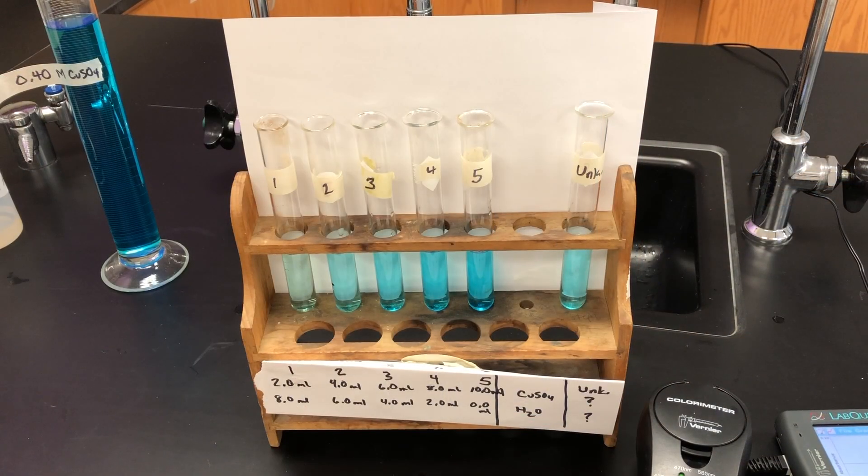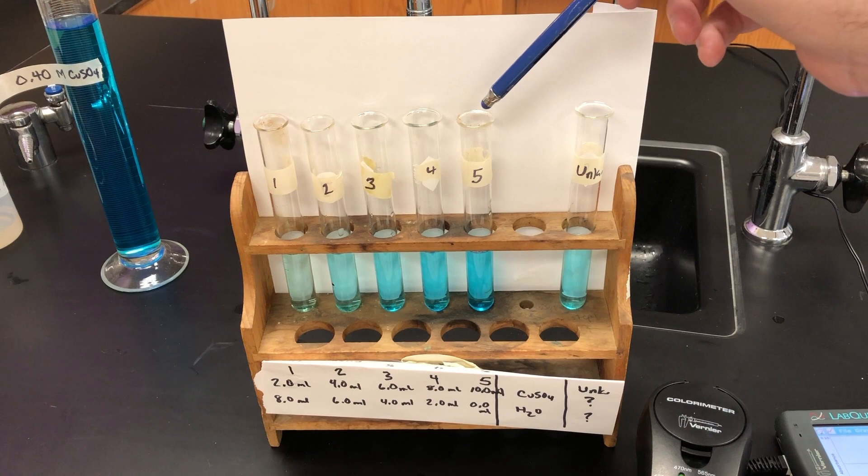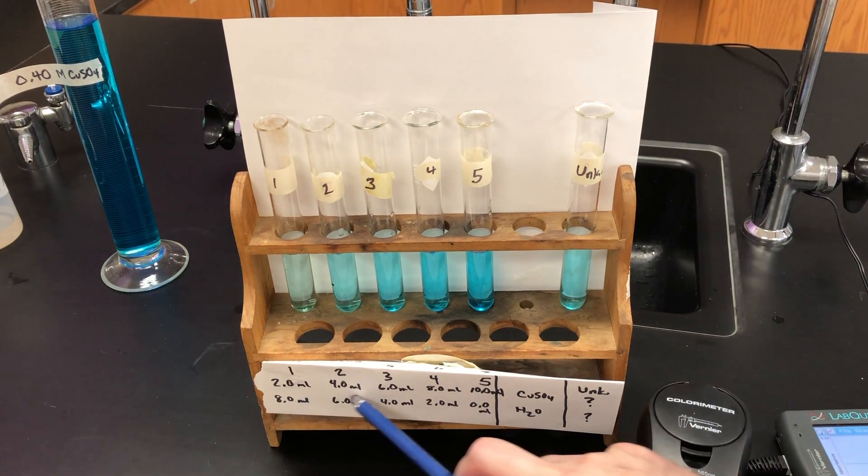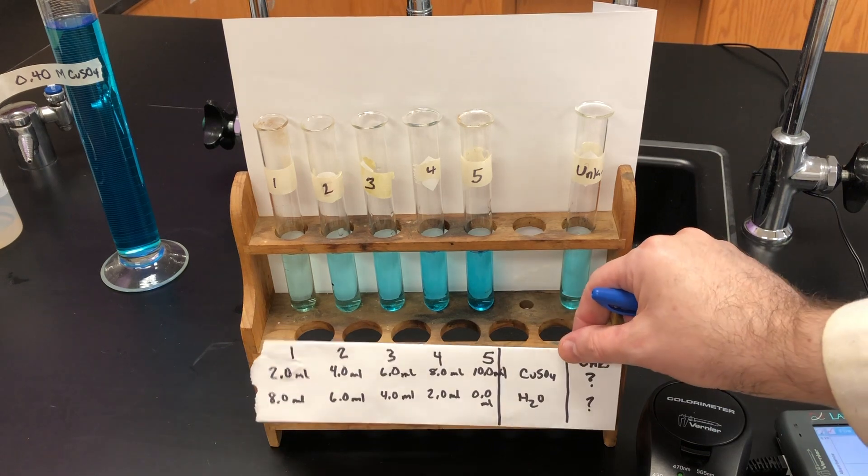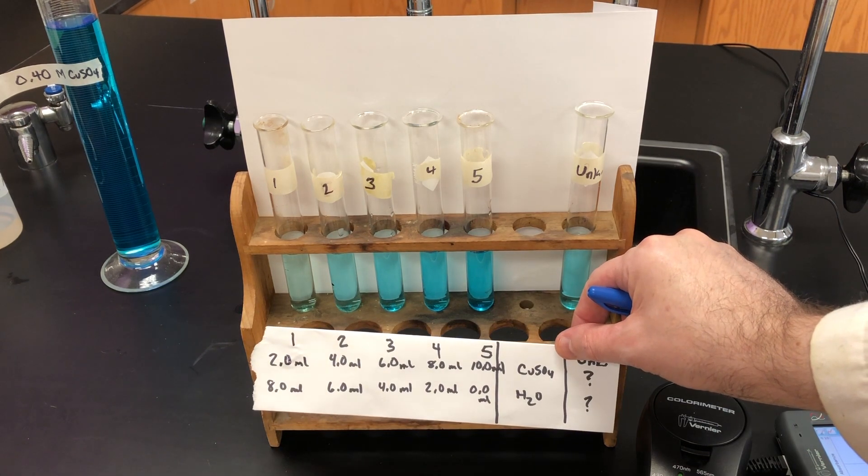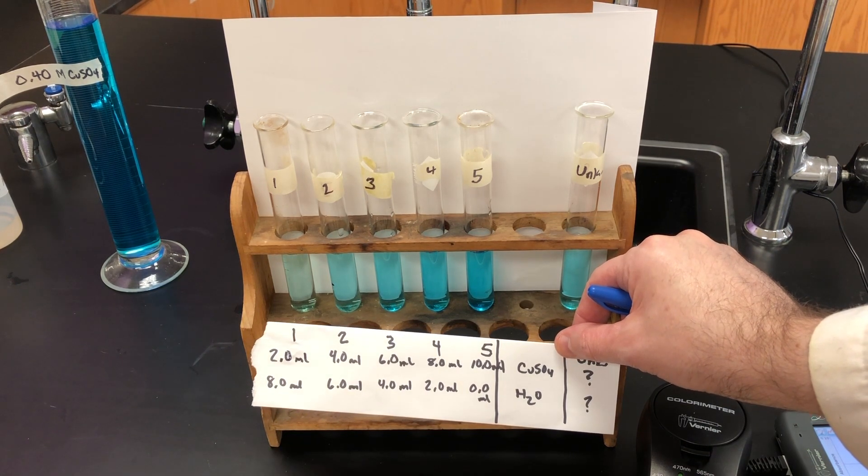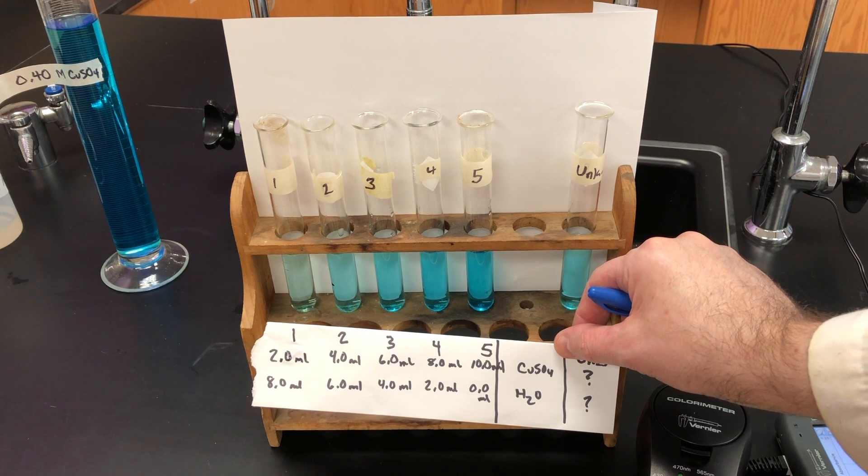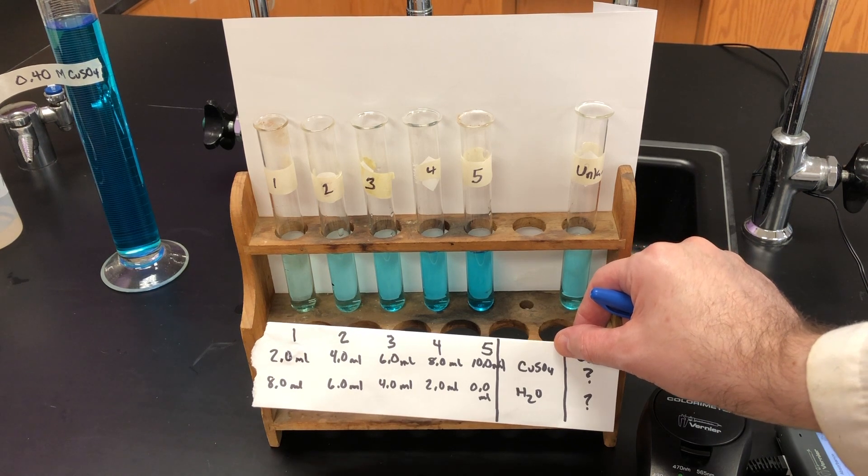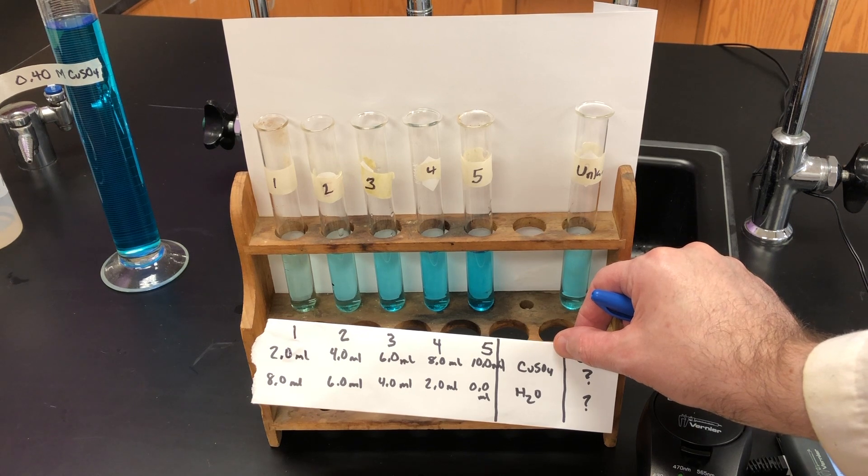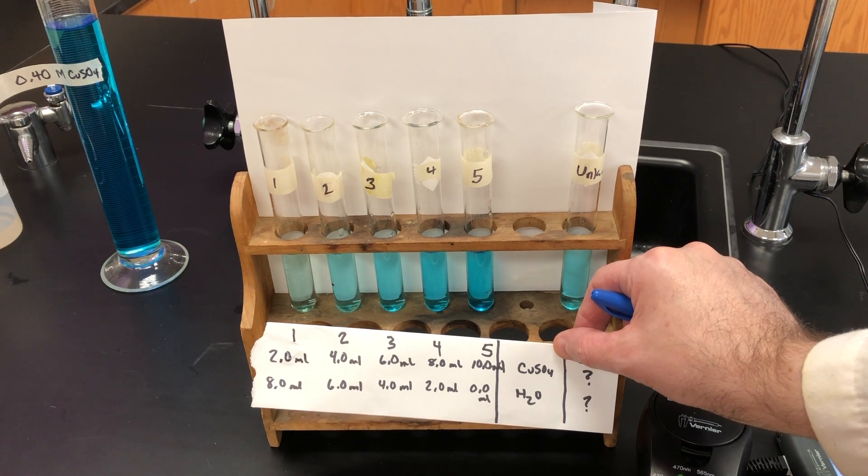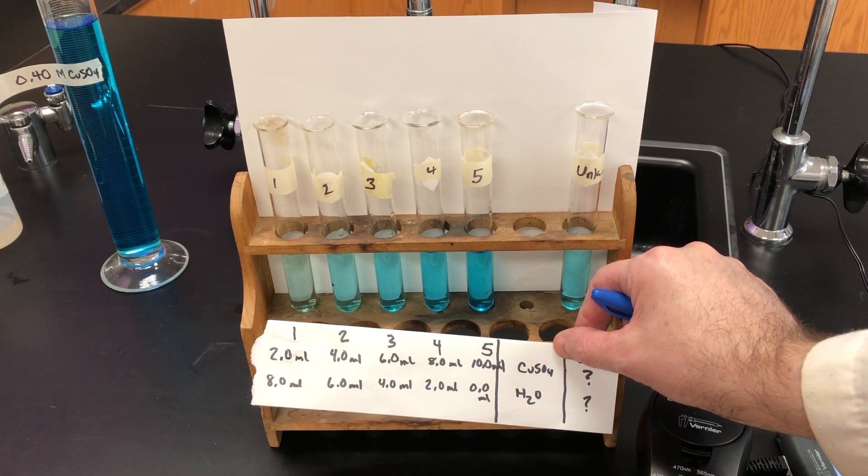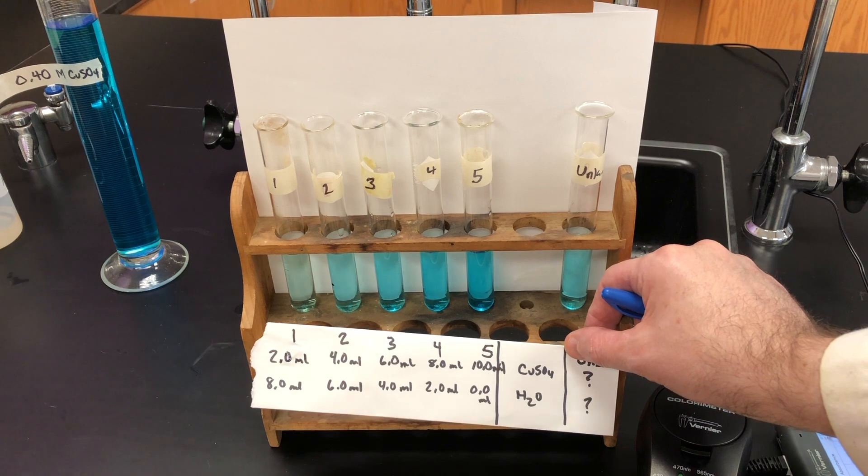We've made the solutions. As you can see, as you increase the amount of copper sulfate in the solution, you'll notice that the solutions get progressively darker, and that has to do with the copper sulfate that's in the solution. I also made an unknown as well, and you'll notice it's somewhere in between any of these. So now what we'll have to do is measure them, and we'll use the colorimeter for that. I'll demonstrate one of them and then show you the results when we're all done.